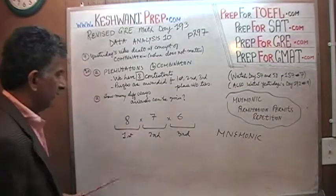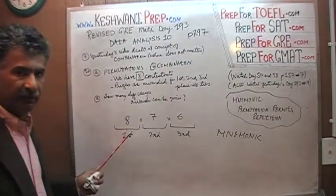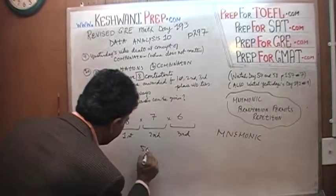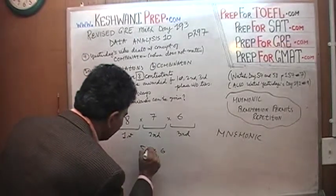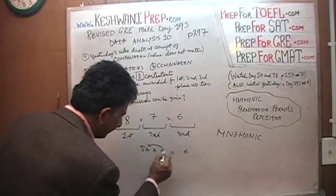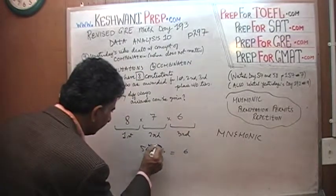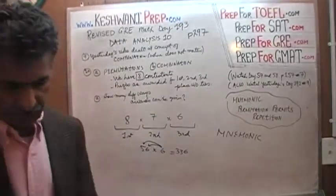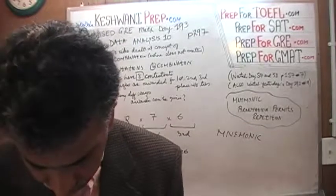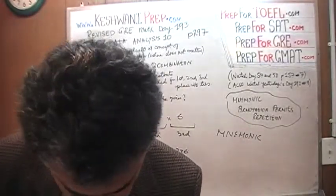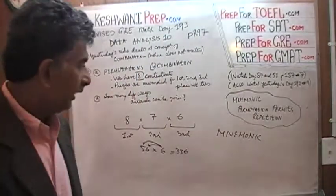Let me calculate: seven sevens are 49, plus 7 is 56. 56 times 6: 6 times 6 is 36, carry 3. 6 times 5 is 30, plus 3 is 33. So 336 ways. Let me verify by checking the answer key - yes, 336 is correct.